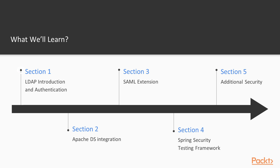We will first connect and authenticate with an embedded LDAP server, and then move on to Active Directory Lightweight Services to connect, authenticate, and authorize with Apache Directory Server. This will detail Apache Directory Server installation, concepts, and configuration, and then we will update the Spring Security application to connect, authenticate, and authorize with Apache Directory Server.